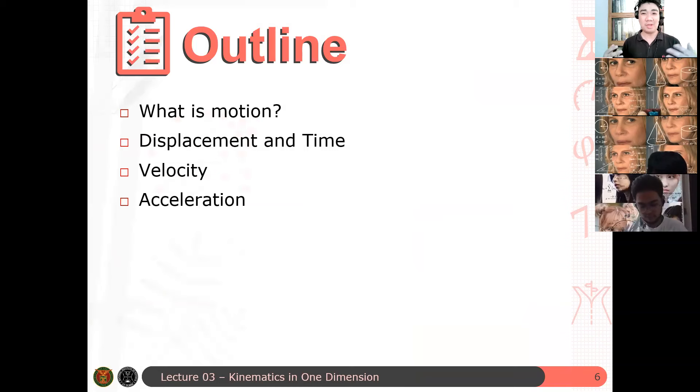First, we discuss what is motion. We are studying mechanics, and mechanics is the study of motion. But what exactly is motion? How do we define it? And how can we say that something is moving? And then after that, we will define some kinematical quantities or mathematical quantities that can describe the motion of bodies, such as displacement, time, velocity, and acceleration.